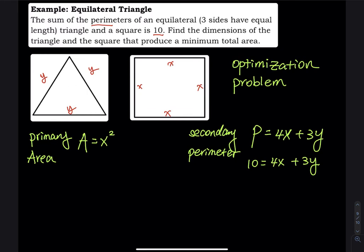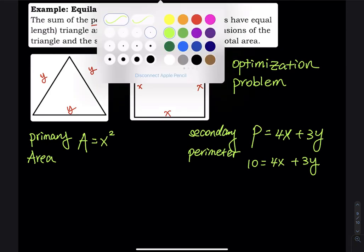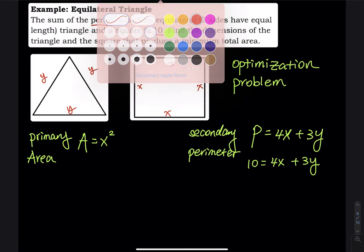For the triangle, the area formula is base times height divided by 2. The base is y, but we don't have the height yet — there is no height given. So for the triangle, let's draw the height.